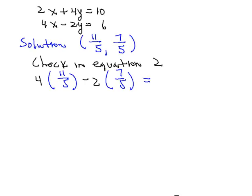And we hope that this will work out to be equal then to positive 6. So multiplying the first term on the left-hand side here, we end up with 44 all over 5 minus multiplying the second term, we have then 14 all over 5, and 44 fifths minus 14 fifths turns out to be 30 over 5.